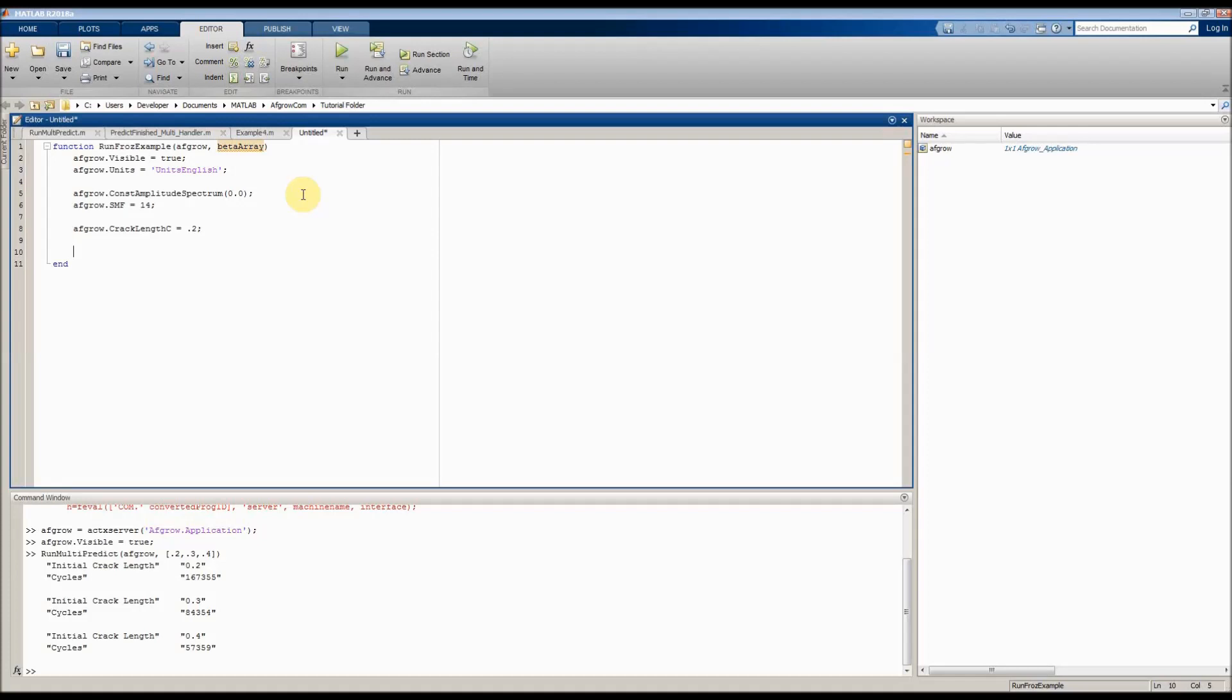Alright, now we can implement the beta correction. We're going to call AFGRO.betaCorrection.bUsedBetaCorrection. I'm just hitting tab to autofill here, equals true. So now we can put in our data. Now we'll call AFGRO.betaCorrection.aBetaCorrectionData equals, and then we'll set that equal to our beta array that was passed in as a parameter.